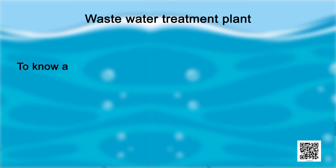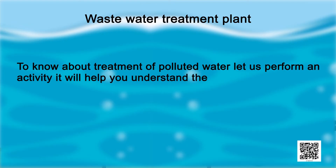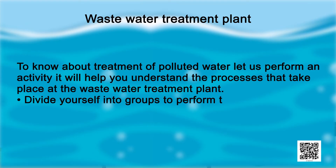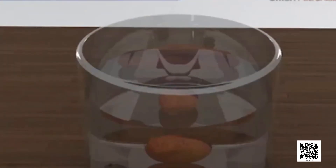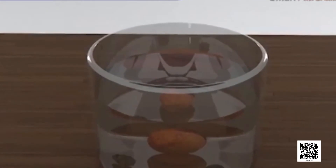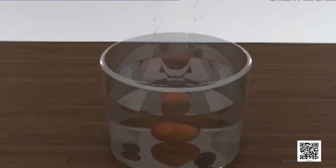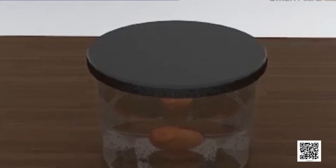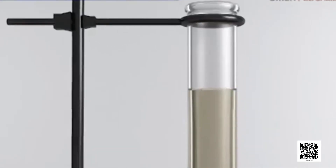Wastewater Treatment Plant. To know about treatment of polluted water, let us perform an activity. It will help you understand the processes that take place at the wastewater treatment plant. Divide yourself into groups to perform this activity. Record observations at each stage. Fill a large glass jar three-fourths full of water. Add some dirty organic matter such as grass pieces or orange peels, a small amount of detergent and a few drops of ink or any color. Cap the jar, shake it well and let the mixture stand in the sun for two days. After two days, shake the mixture and pour a small sample into a test tube. Label this tube 'before treatment sample 1'.